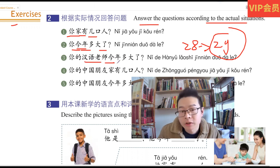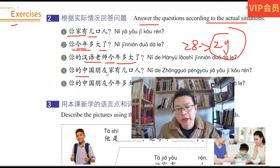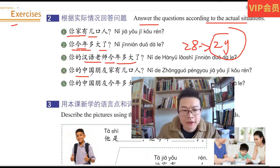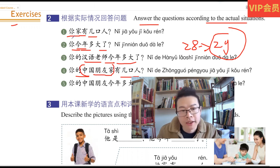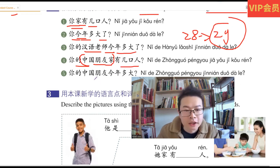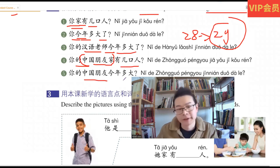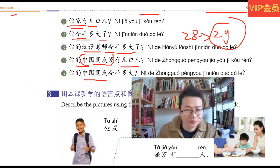汉语老师, Chinese teacher. 今年多大了? 你的中国朋友? Do you have Chinese friends? 有几口人? 你的朋友, 中国朋友家? 你家? The same question. 你的中国朋友今年多大? 你的汉语老师多大? 你今年多大? 好.